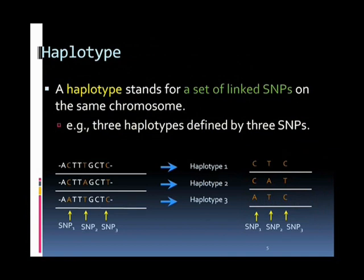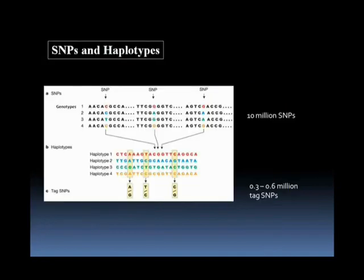A haplotype stands for a set of linked SNPs on the same chromosome. We can find 3 SNPs in these 3 chromosomes because there are polymorphisms at each SNP locus. The corresponding haplotypes are CTC, CAT, and ATC. If we only look at the SNP patterns, they are called haplotypes.